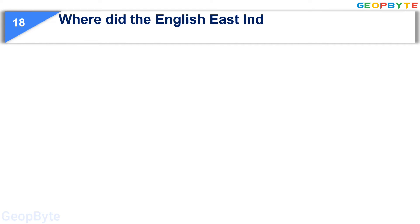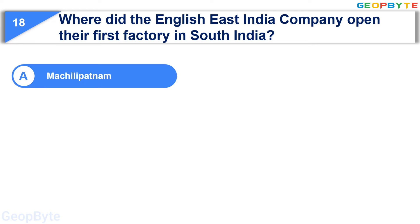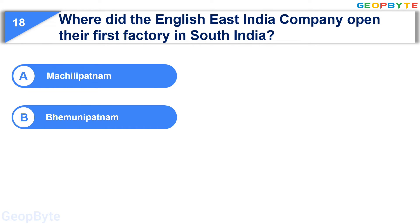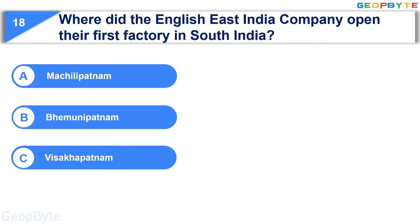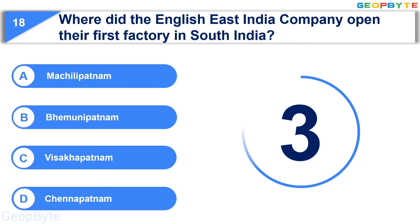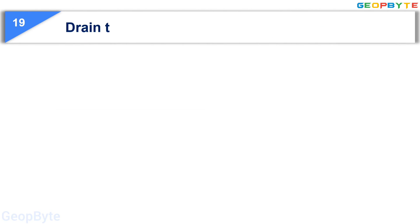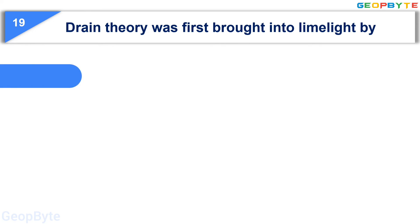Moving to the eighteenth question: where did the English East India Company open their first factory in South India? Option A: Machilipatnam, Option B: Bhimunipatnam, Option C: Visakhapatnam, Option D: Chennapatnam. Your time starts now. Your time is up and the correct answer is Option A: Machilipatnam.